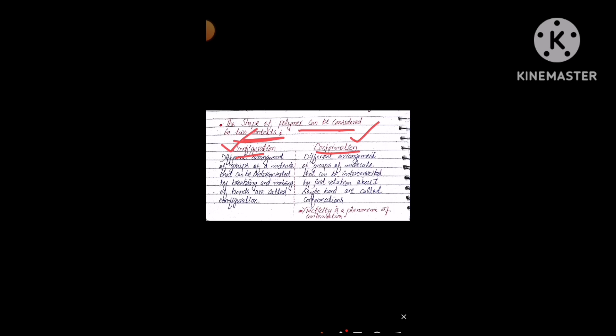Configuration refers to different arrangements of groups in a molecule that can be interconverted only by breaking and making bonds. Conformation refers to different arrangements of groups that can be interconverted by rotation about a single bond. An important MCQ point: tacticity means stereochemistry, and tacticity is a phenomenon of configuration — remember that.